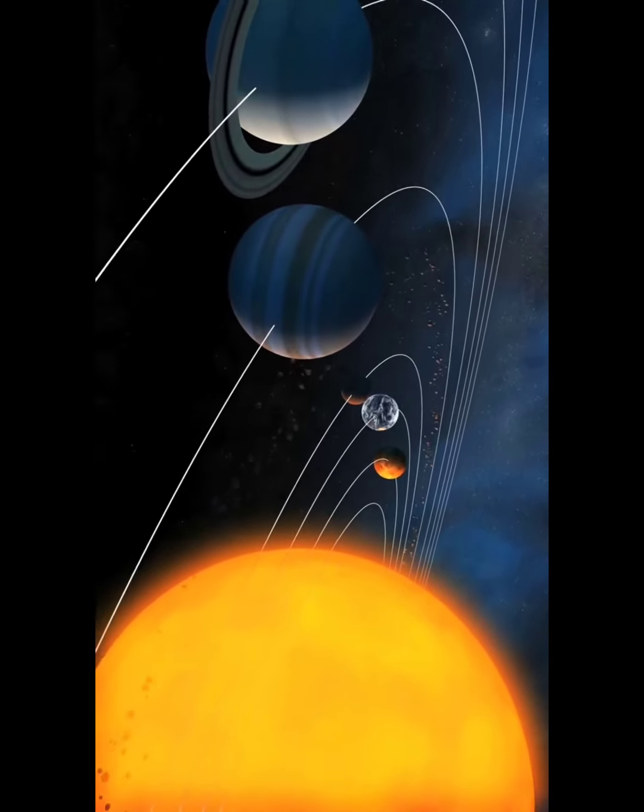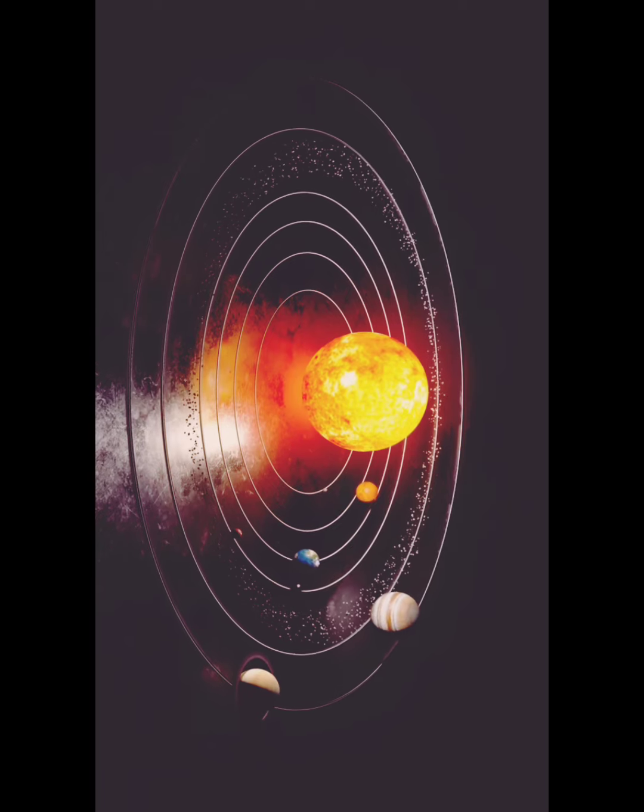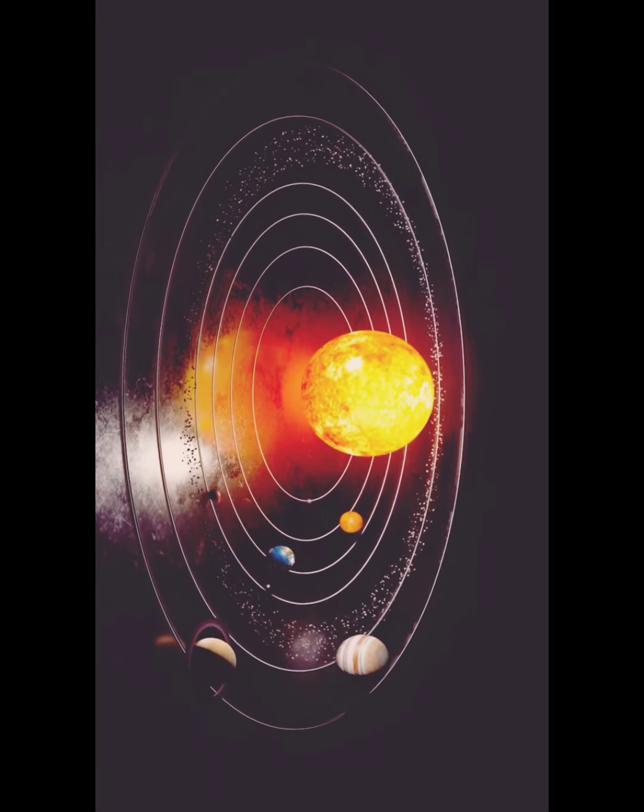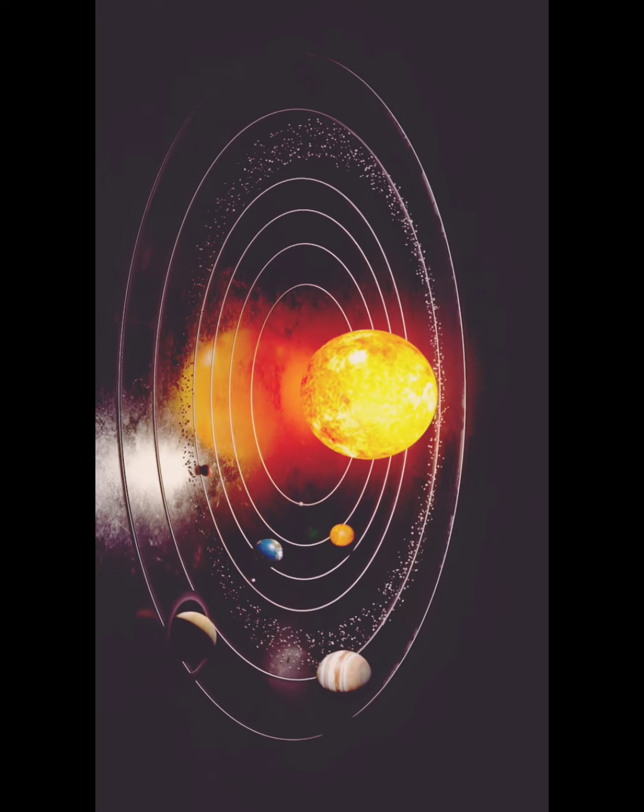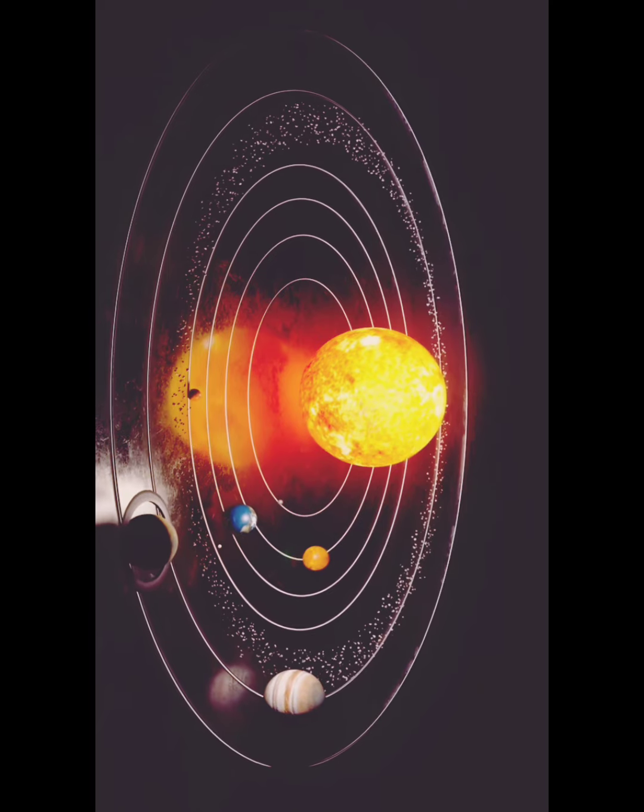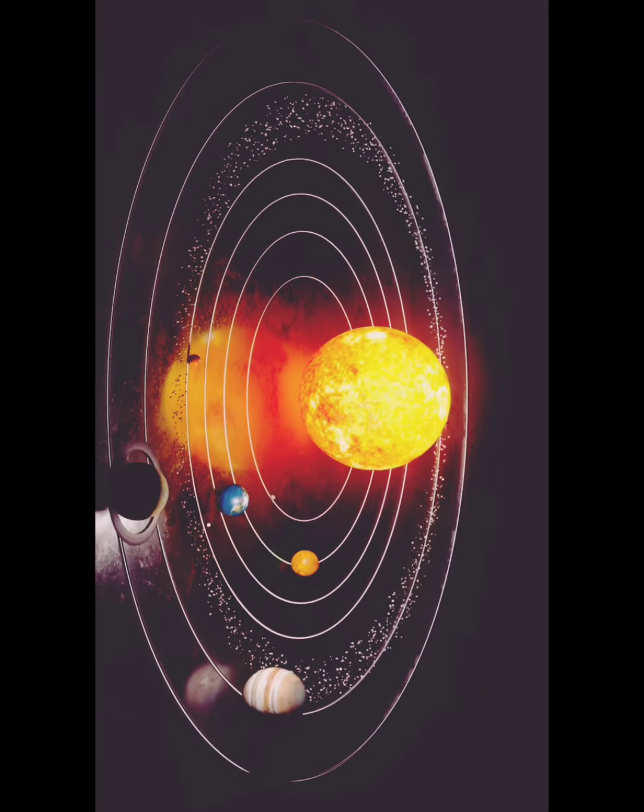However, even with all these things, most of the solar system is empty space. The solar system itself is only a small part of a huge system of stars and other objects called the Milky Way galaxy.